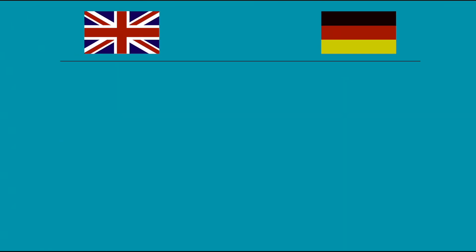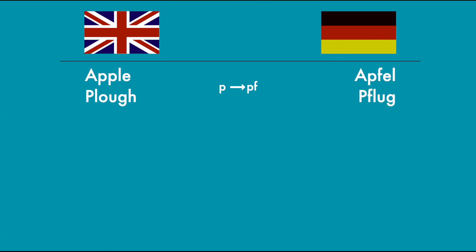For instance, in German the letter P shifted to PF, whereas in English we still have words like apple or plow. In German, they are now pronounced as Apfel or Pflug. Similarly, German replaced the TH sound with a D sound. English words like thorn or brother are now translated as don or Bruder. There are of course many more shifts and examples, but you get the idea.